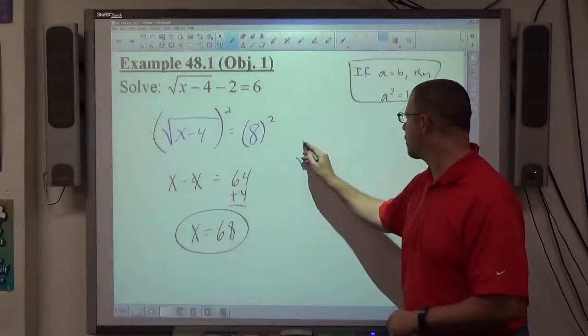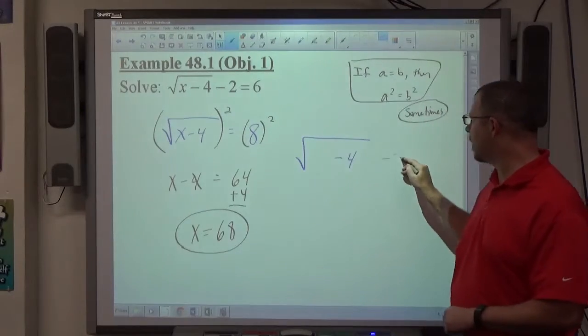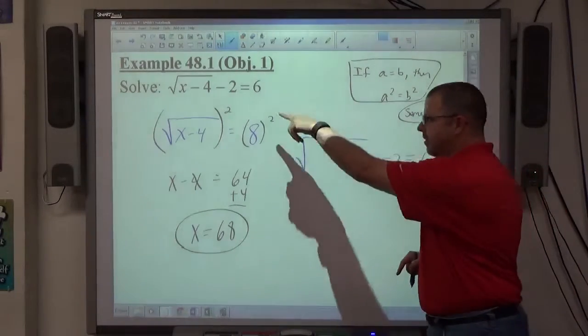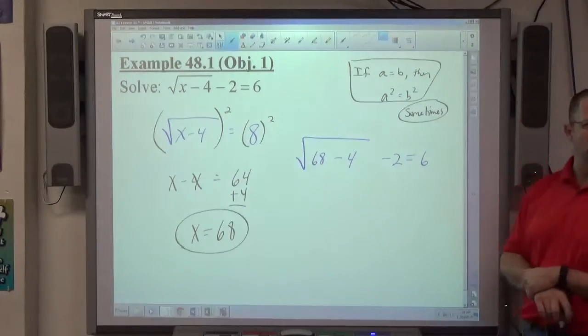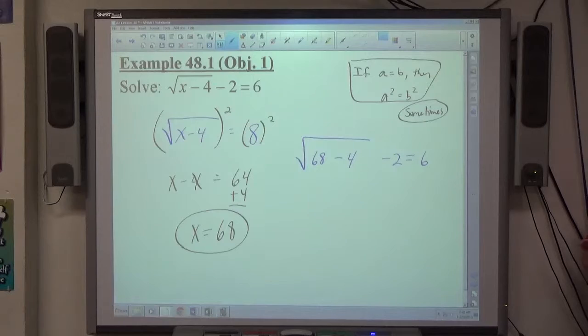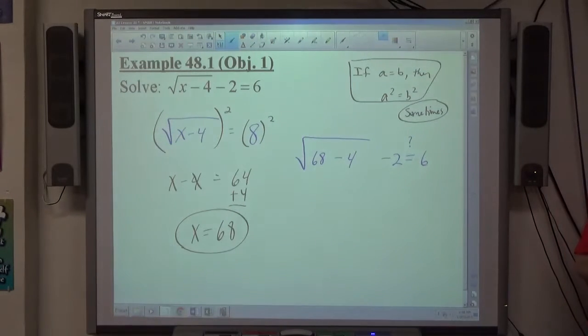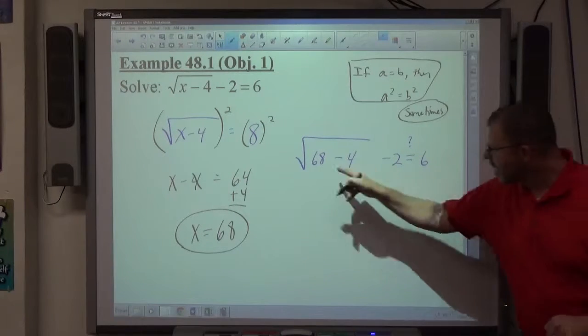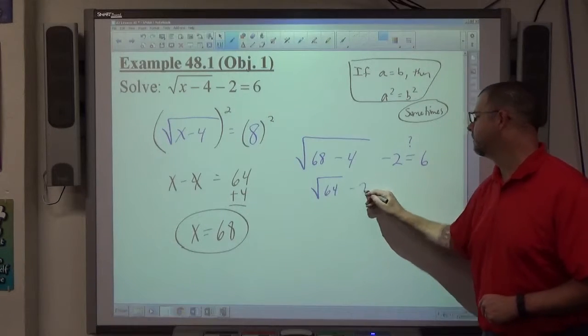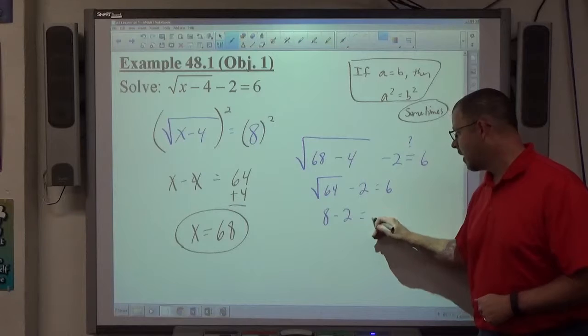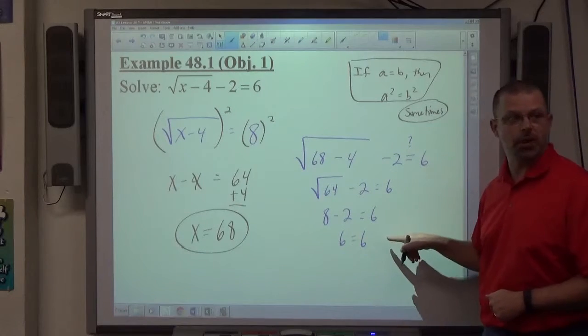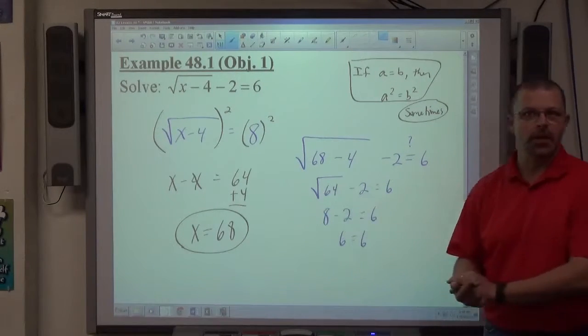If we try it out, I've got the square root of 68 minus 4 minus 2 equals 6. x is right here. x is supposed to equal 68, right? So I just replace x with the value we got it to be, and we verify, I'm going to put a little question mark over an equal sign right now, we're going to verify that it's actually a true statement. If it is, great. If it isn't, we just throw it out. This gets to the square root of 64, right? Square root of 64 is 8. 8 minus 2 equals 6? 6 equals 6, that's true. So we're good. That's the right answer.